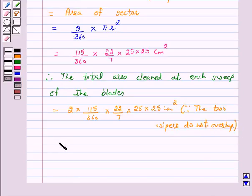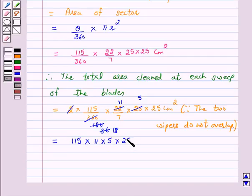On cancellation, this is equal to 115 into 11 into 5 into 25 upon 18 into 7 centimeters square.